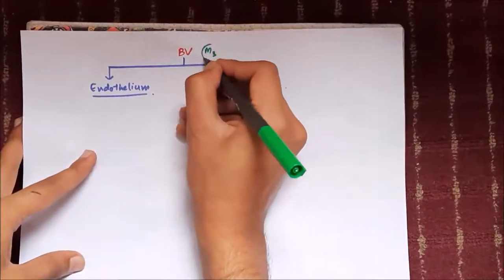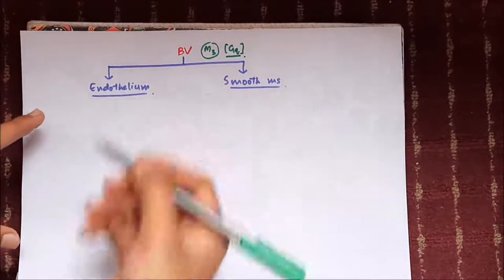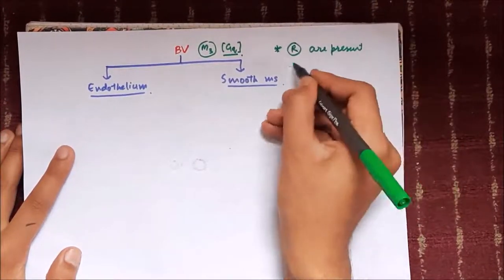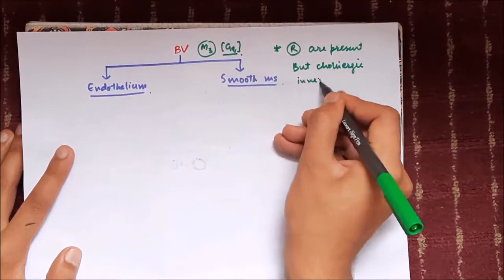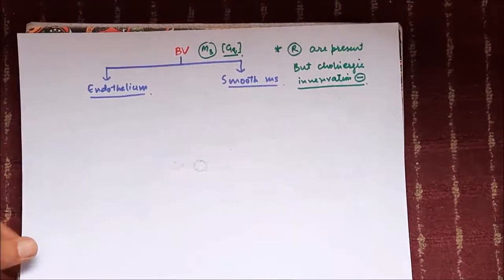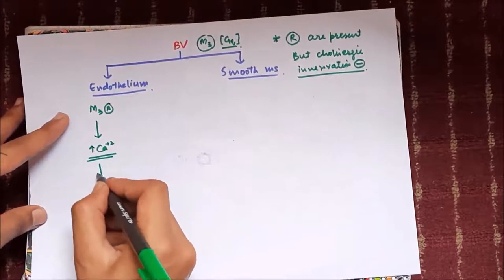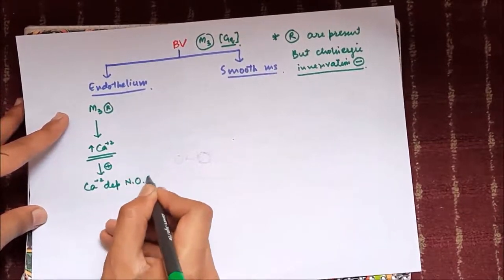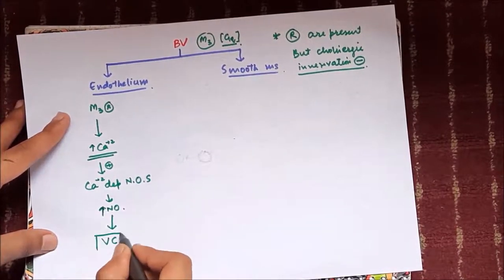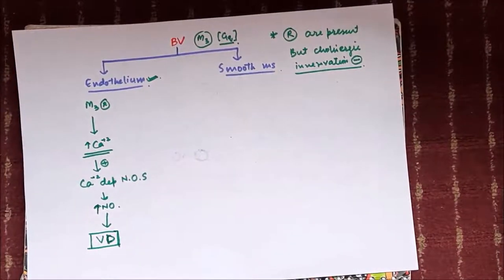In blood vessels, M3 receptors are present at two locations: on the endothelium and on the smooth muscle in the tunica media. However, cholinergic innervation is normally not present in blood vessels, so these receptors are stimulated only by circulating catecholamines or injected drugs. On the endothelium, stimulation of M3 receptors increases intracellular calcium, which stimulates calcium-dependent nitric oxide synthase, increasing nitric oxide levels.